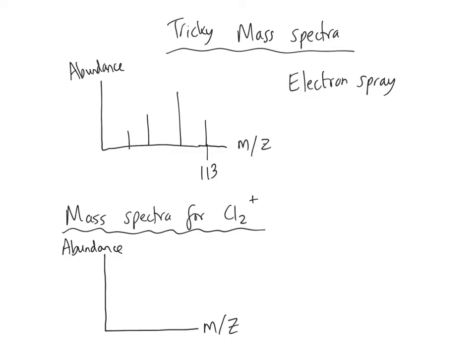For a mass spectrum generated using electrospray, remember that what you detect is the gaseous sample that has gained a proton. So you detect something with an m/z value one higher than the Mr. For example, an m/z of 113 means the Mr is actually 112 — you must subtract one from the m/z value when calculating relative molecular mass for a sample ionised by electrospray. Pay attention to which ionisation technique is mentioned in the question.